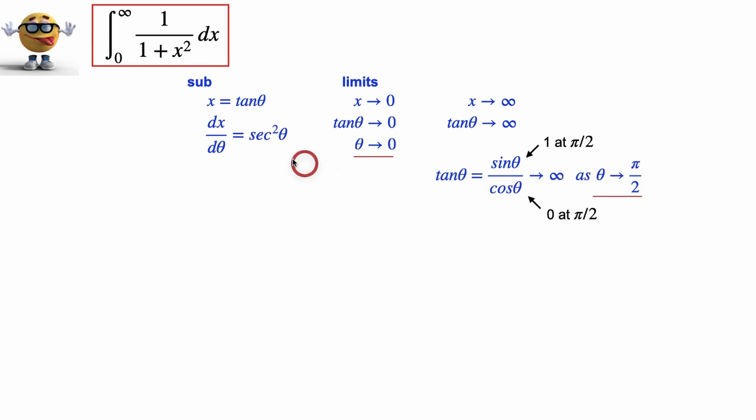Anyways, we'll substitute this into our limits right here. So these are our limits, and this is our substitution. We solve for dx, so dx is secant squared d theta, so we have that here.